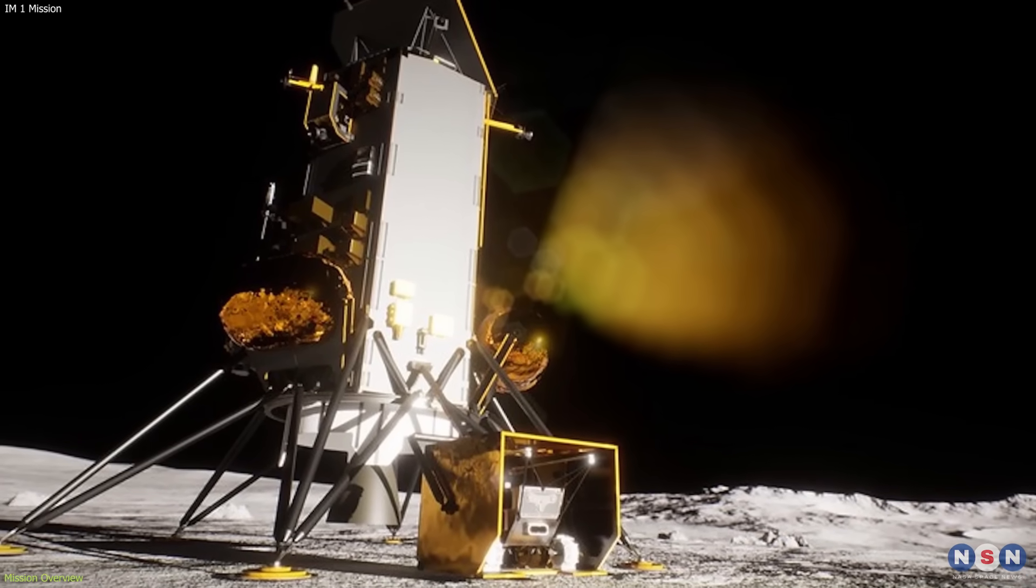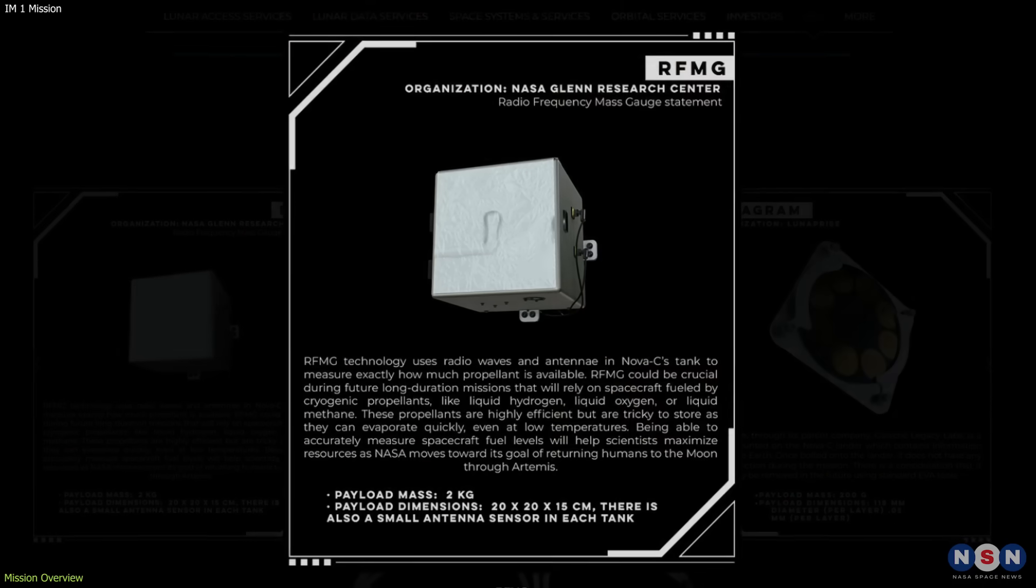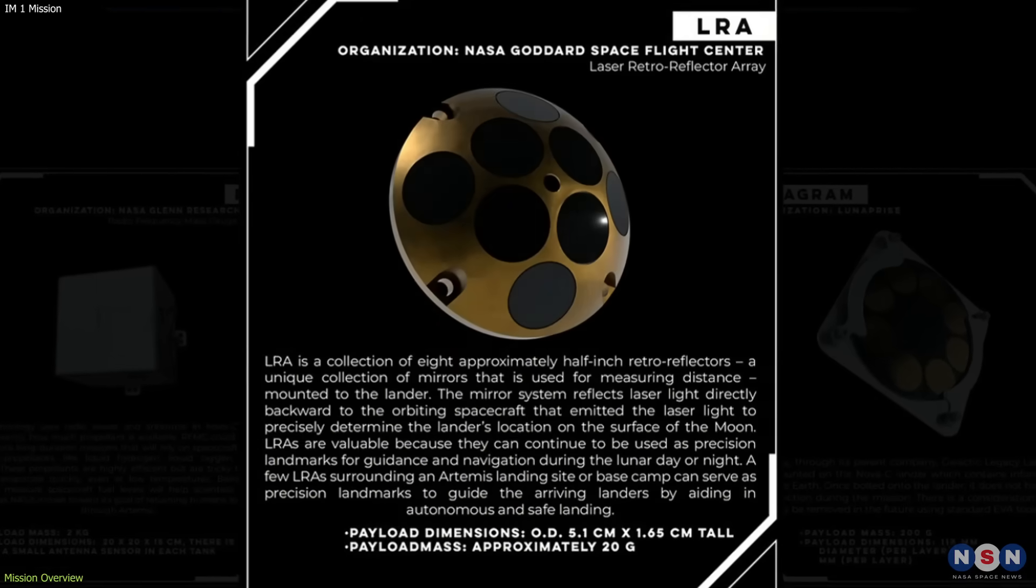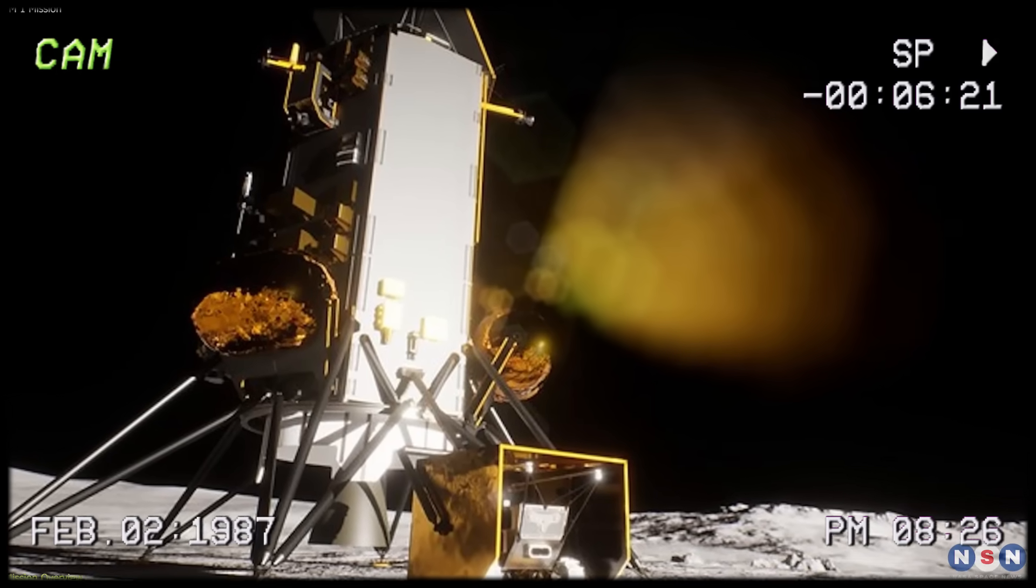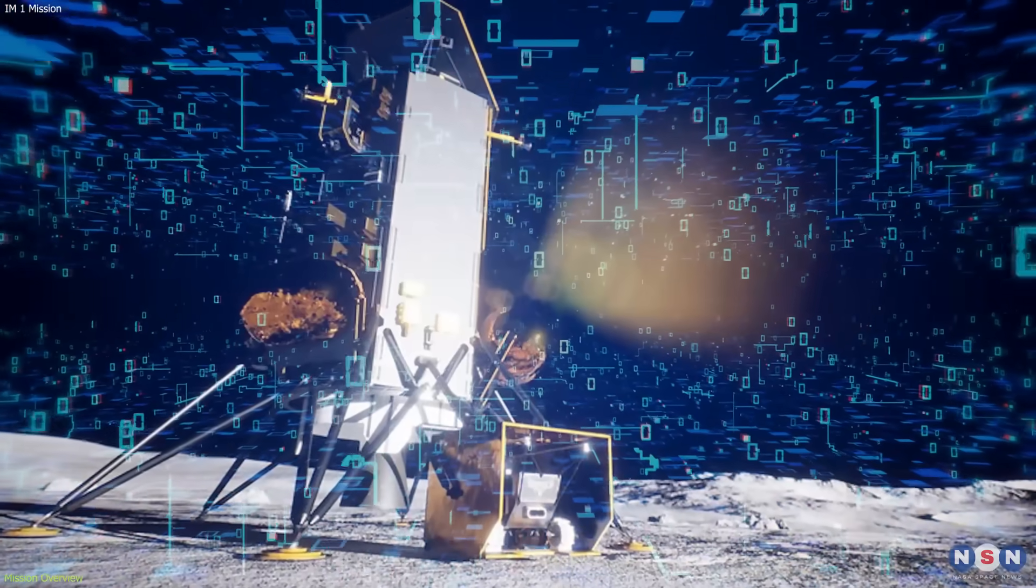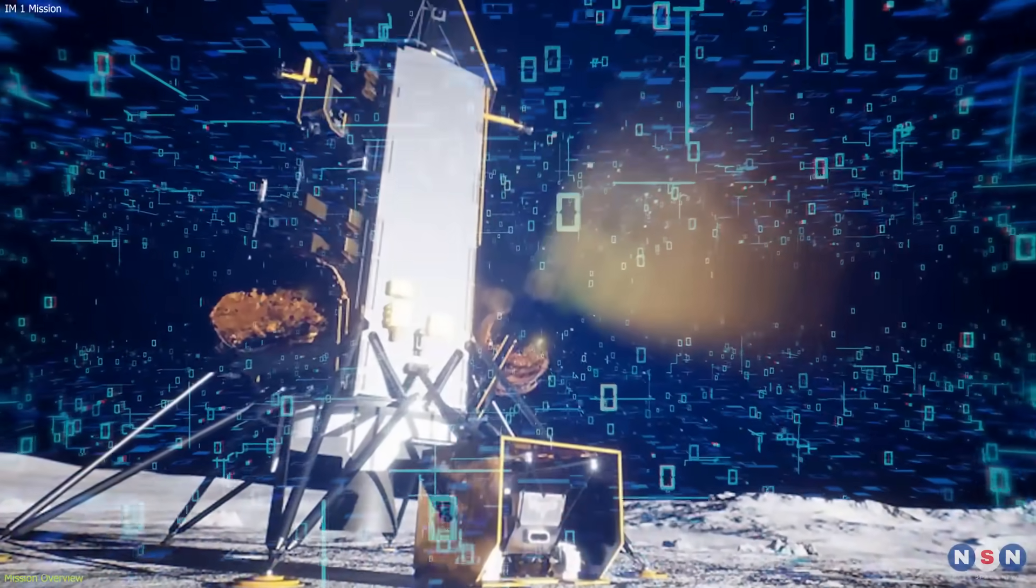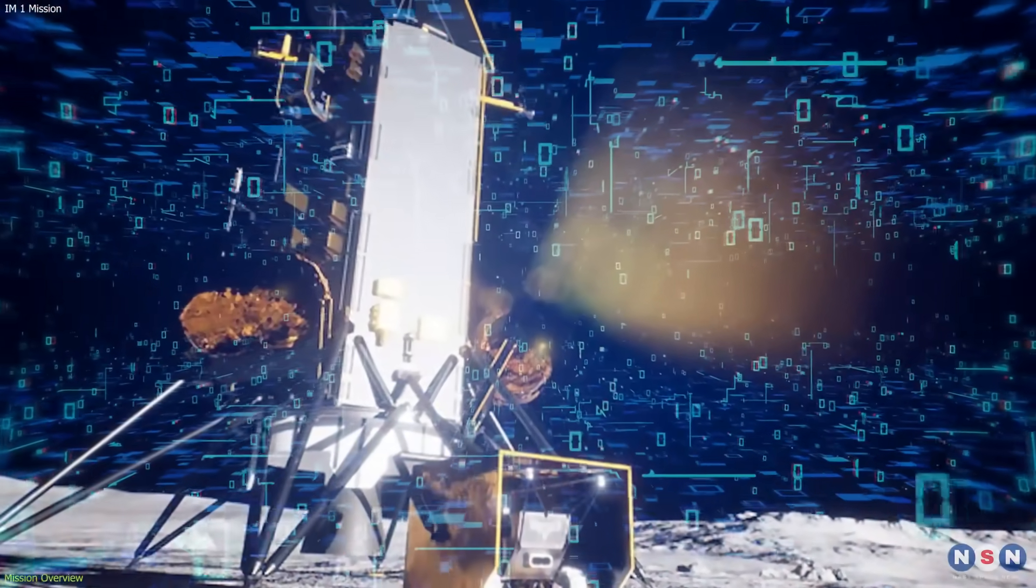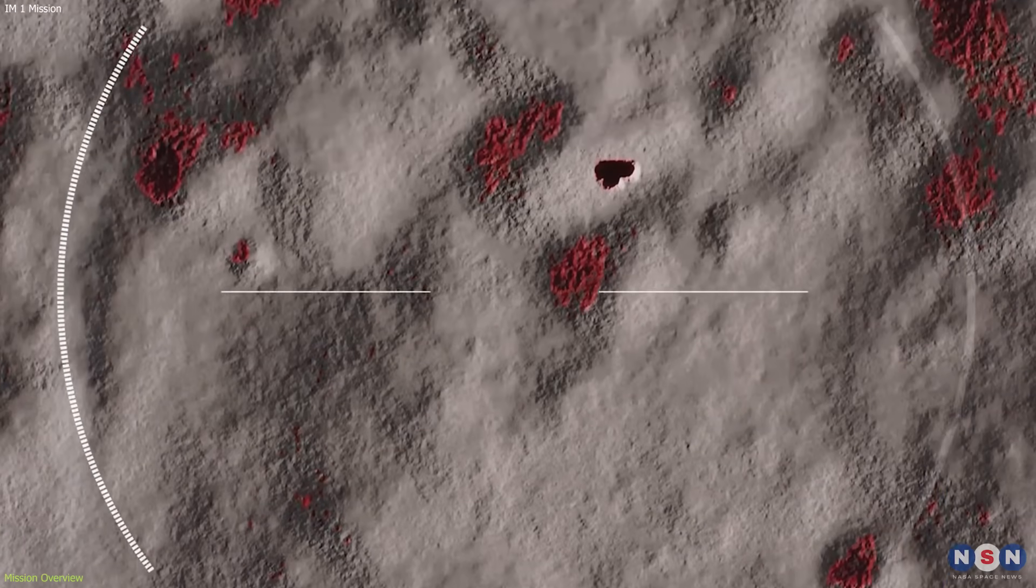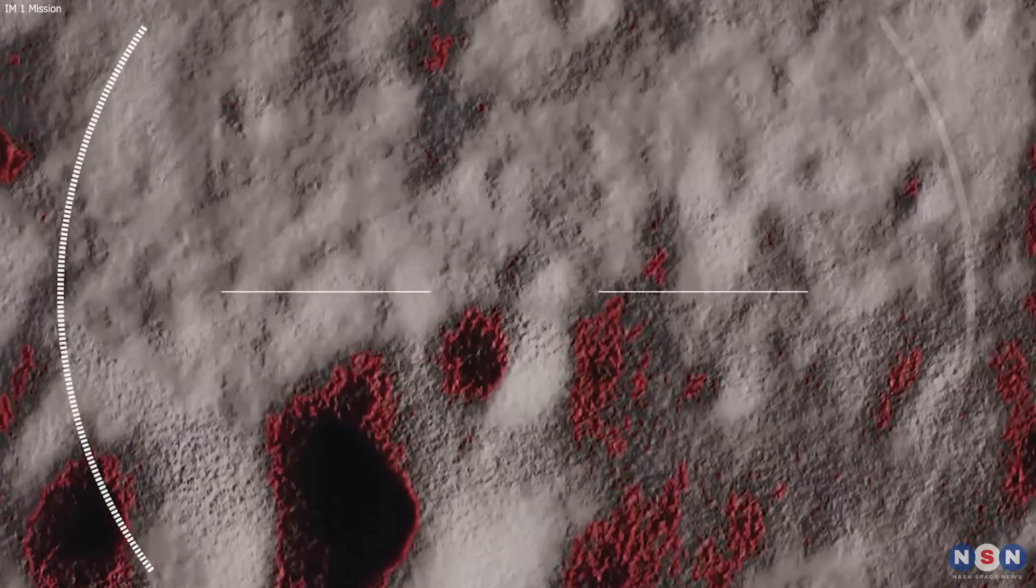During this time, the lander will deploy and activate the six NASA payloads that it carries, and it will also perform some autonomous tasks, such as taking pictures and videos, and collecting and analyzing surface samples. It will also test some new technologies, such as a navigation node and a GNSS receiver, that could enable future landers and rovers to navigate more accurately and autonomously on the Moon.